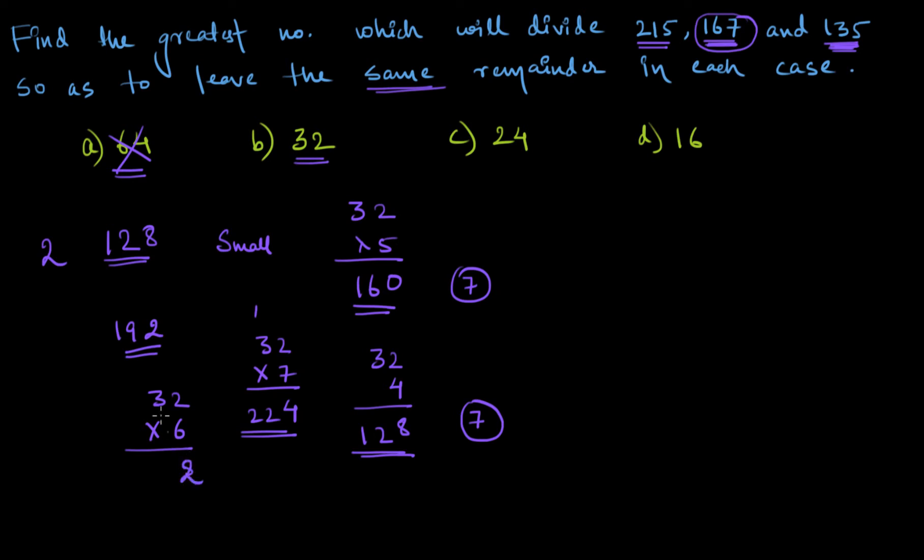6×2=12, 1 carry, 6×3=18, 192. So then in case of 215, the remainder will be huge, not exactly equal to 7. So even 32 cannot be my answer.